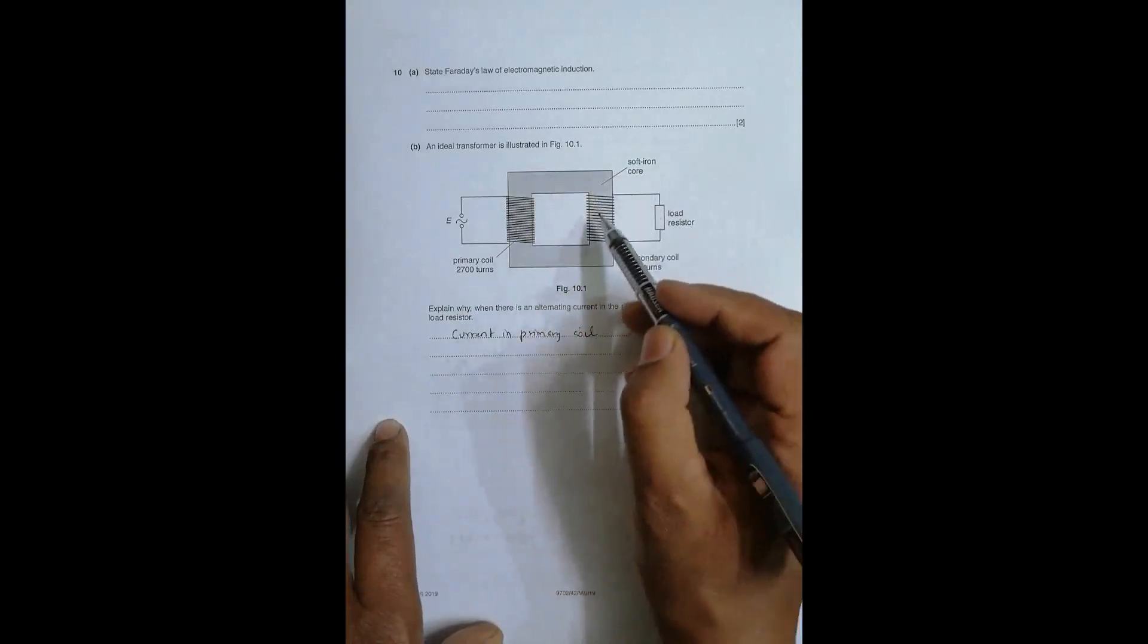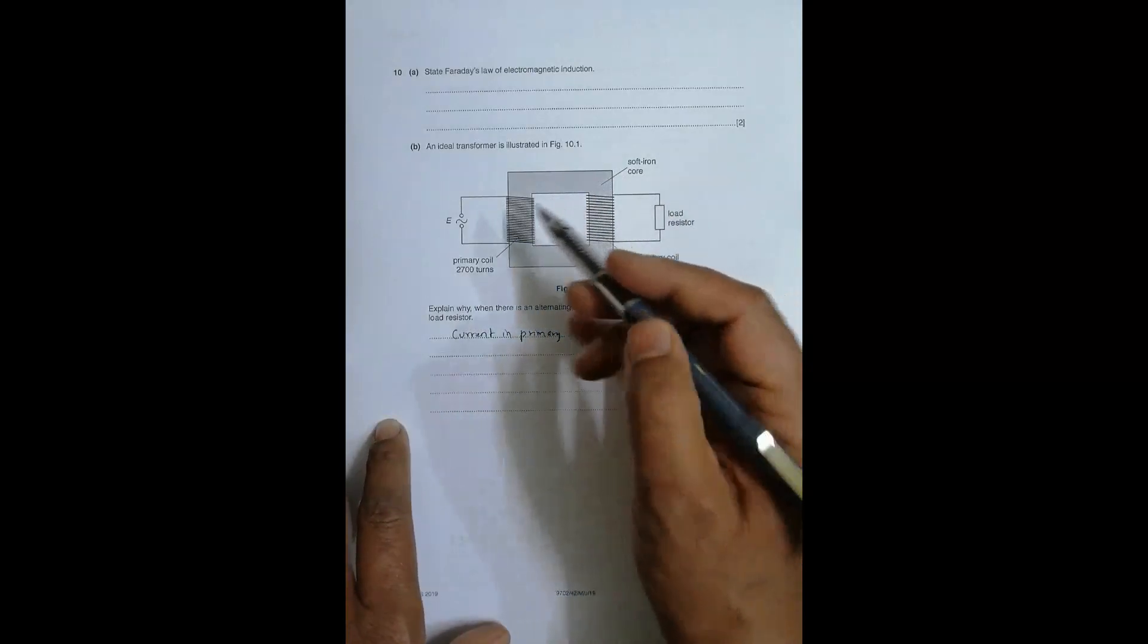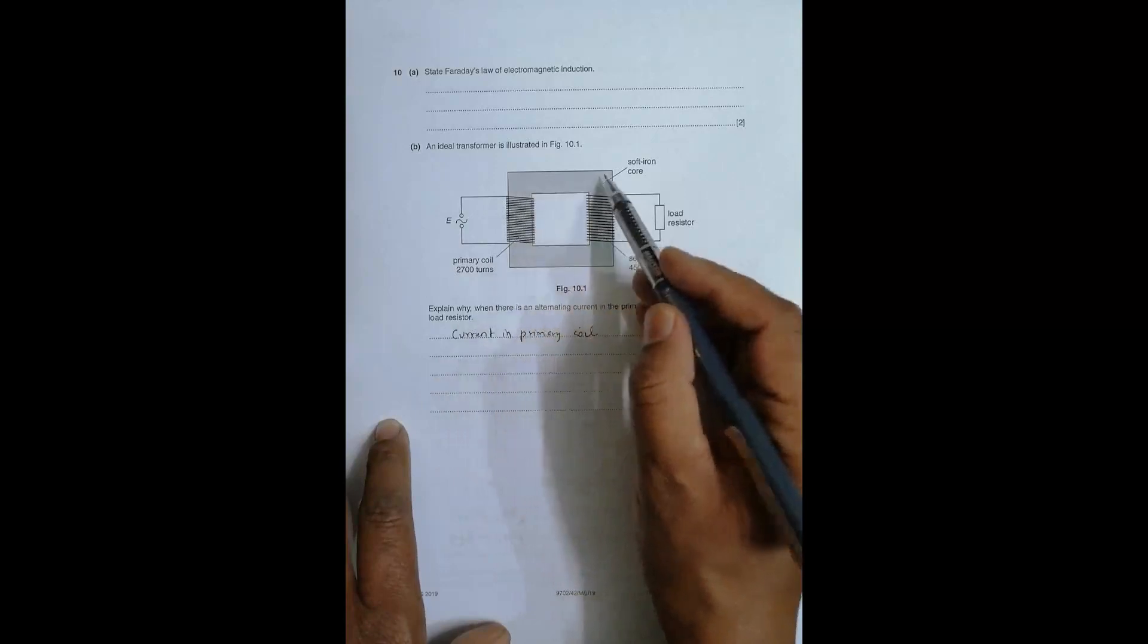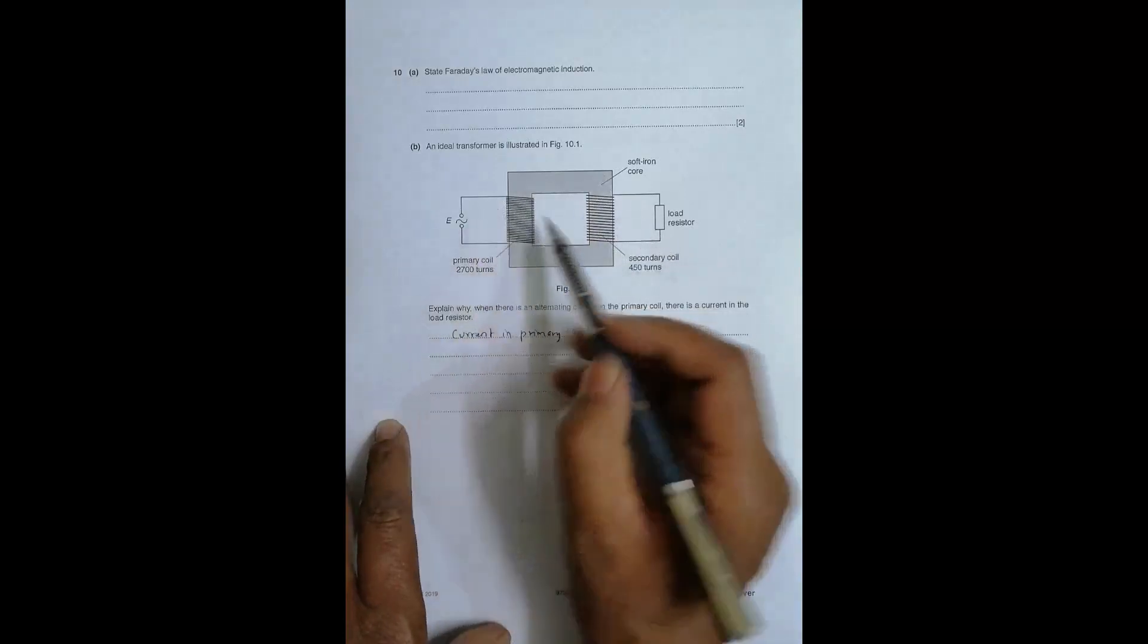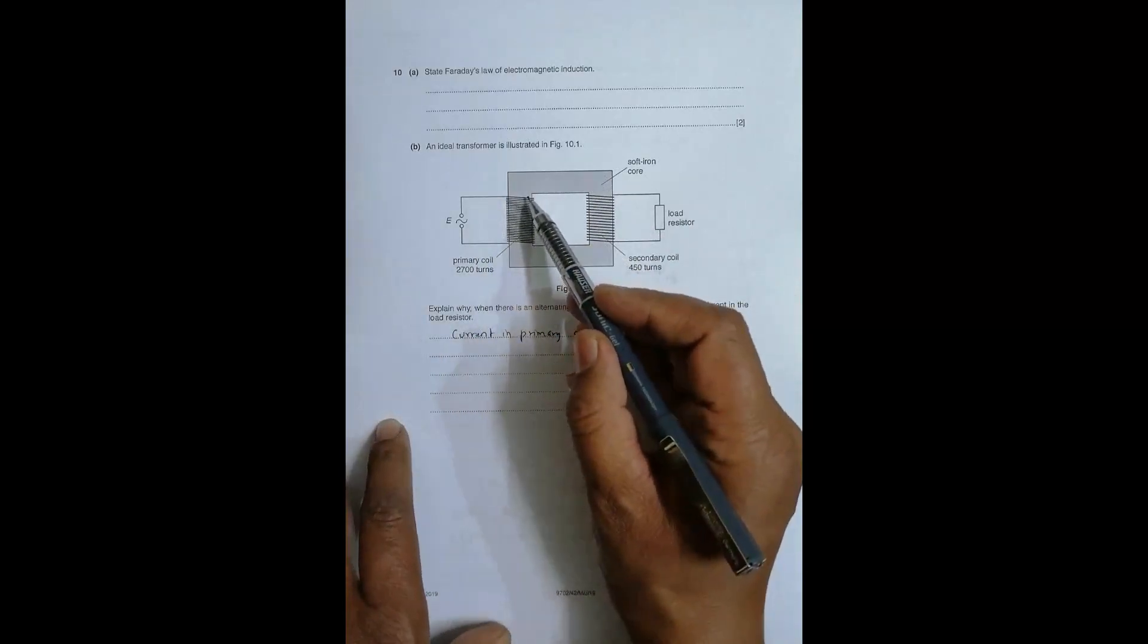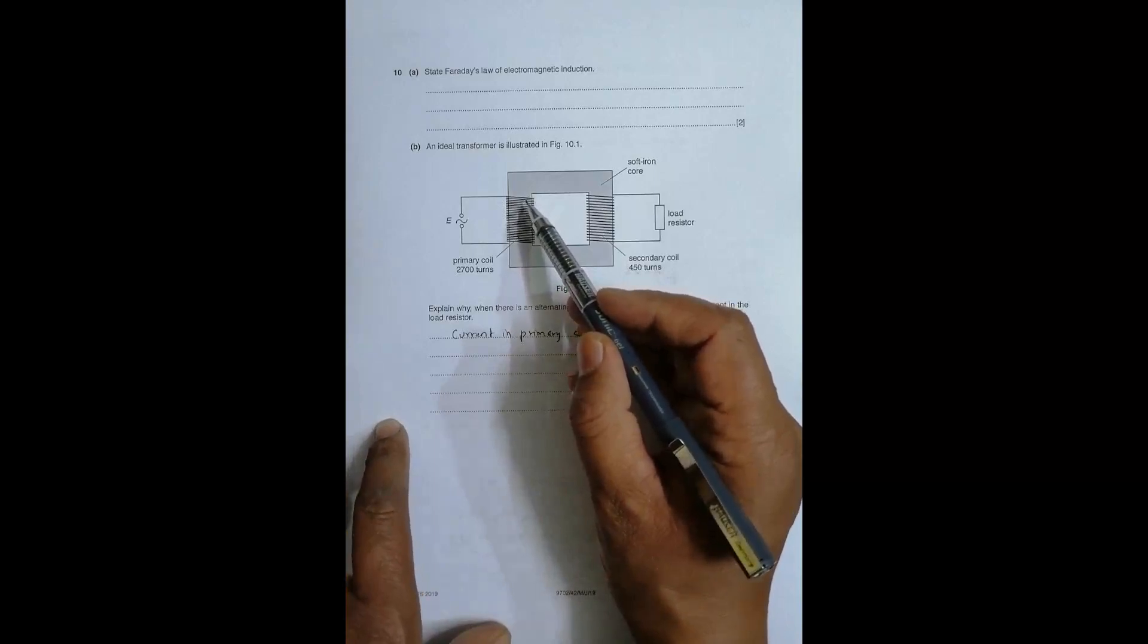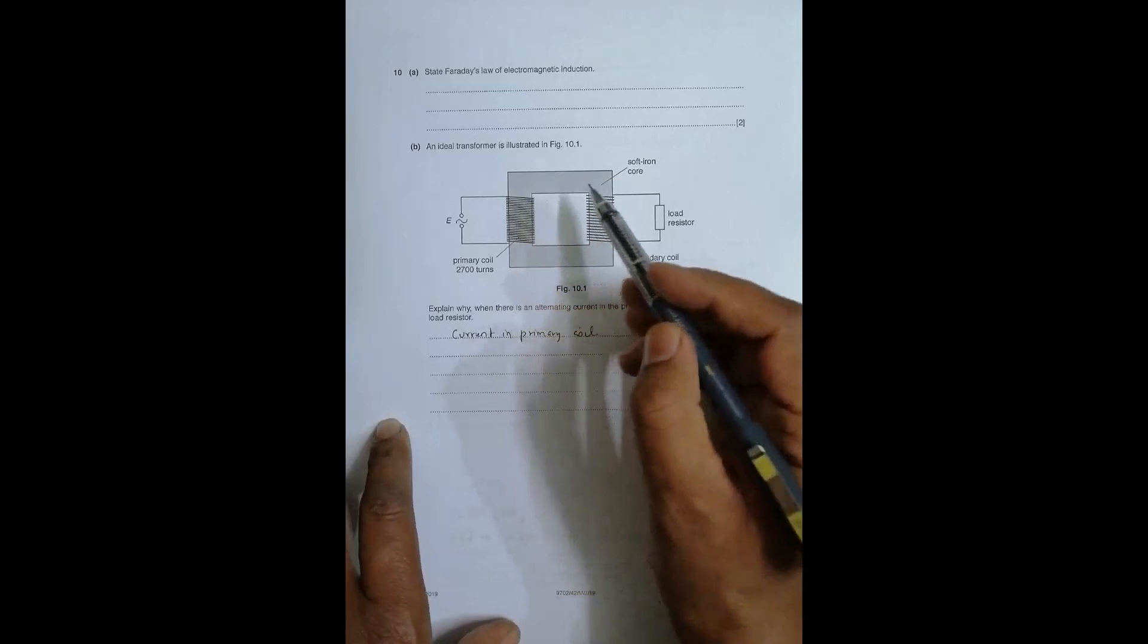Since there is a soft iron core, almost all of the field lines will be linked to the secondary coil. When there is an alternating current, the field lines will expand, increase or decrease - sometimes they increase, sometimes they decrease, sometimes they become intense, sometimes less intense.